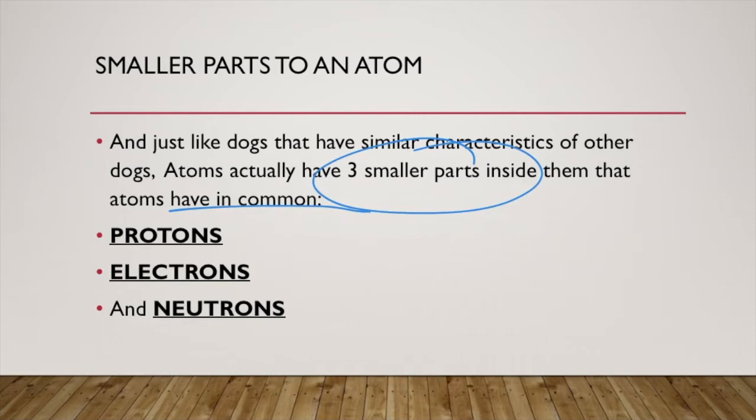They have things called protons, electrons, and neutrons. These three parts are in common with every other element's atom. An aluminum atom will have these three parts. A potassium atom will have these three parts. A helium atom will have these three parts. They have things in common, but they have different features of those things, which makes them unique.